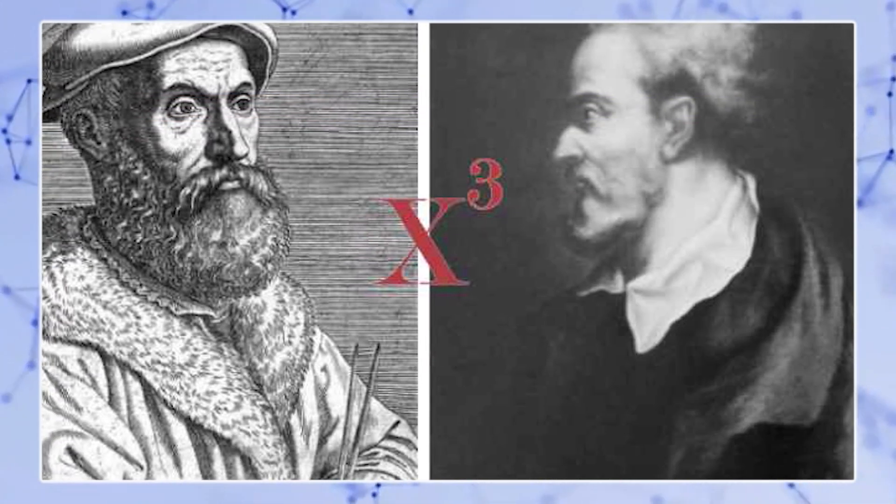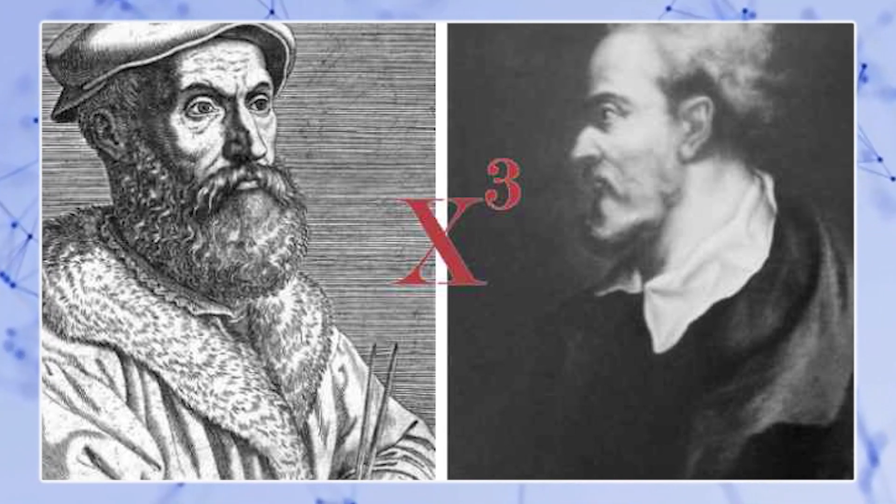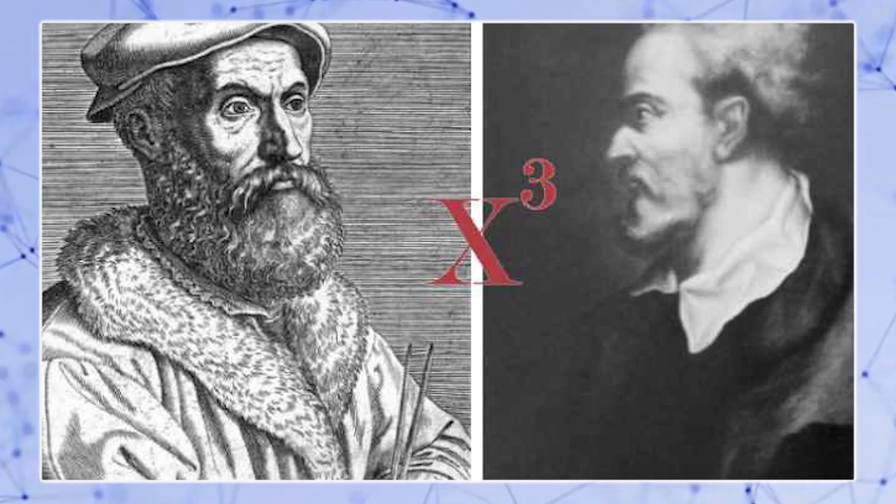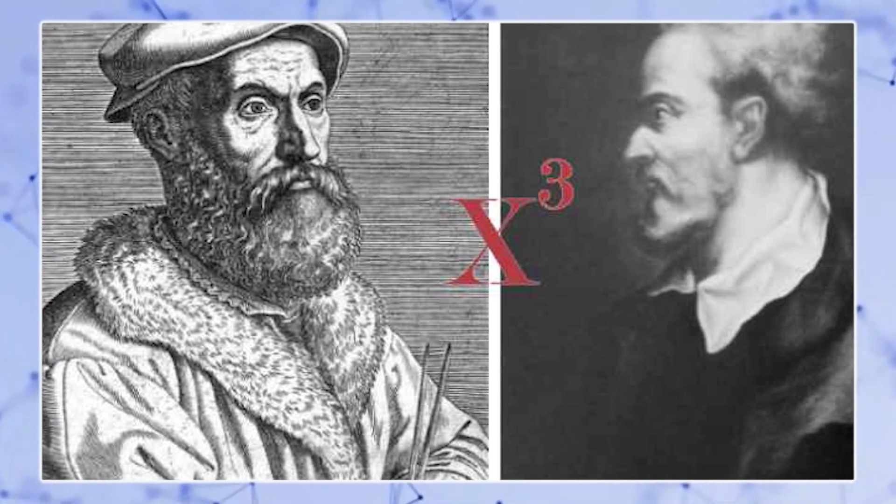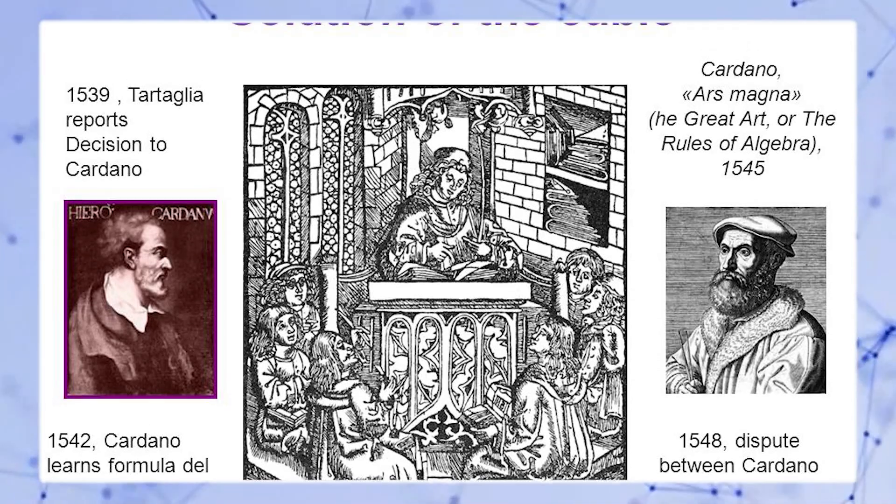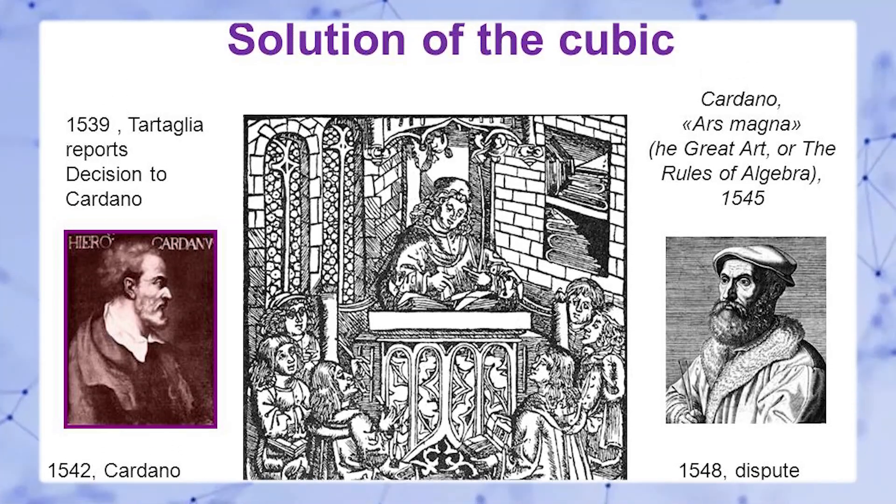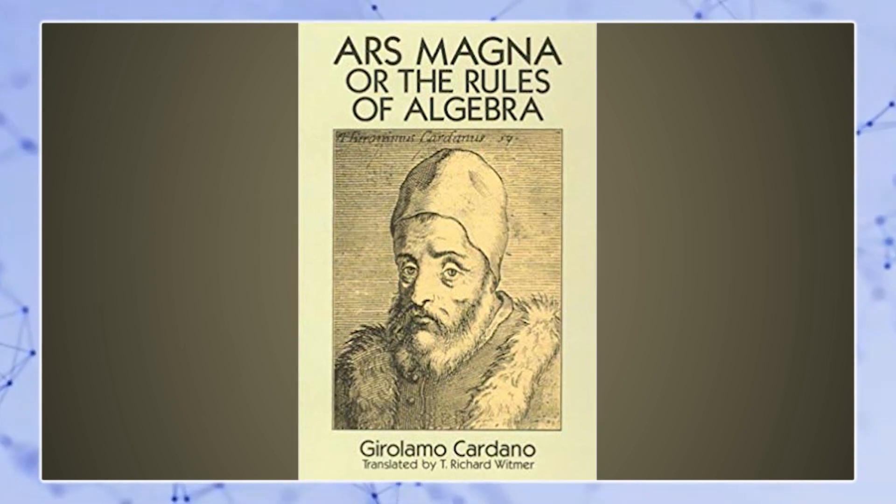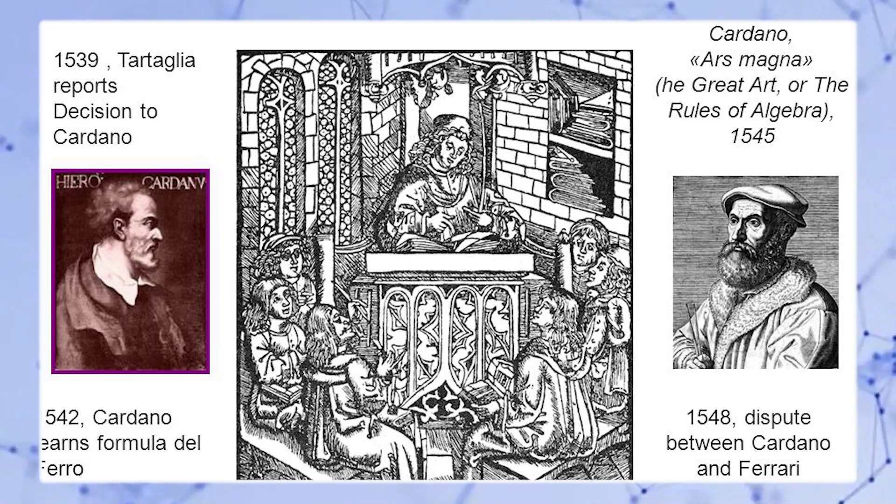Cardano forced Tartaglia to reveal his formula of solving cubics. Poor Tartaglia had to show his formula to Cardano with a promise never to reveal it. However, Cardano broke his promise and published a formula of cubics in his book Ars Magna. Cardano justified his publication by a footnote to furious Tartaglia that Del Ferro also discovered a crucial solution of cubics before him.